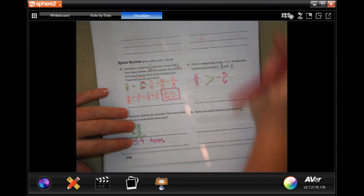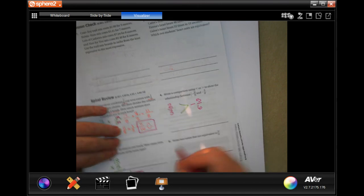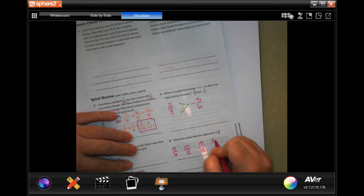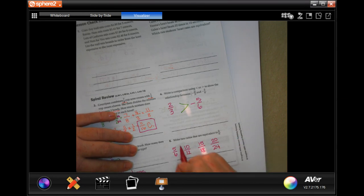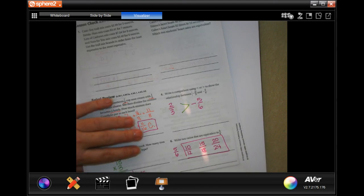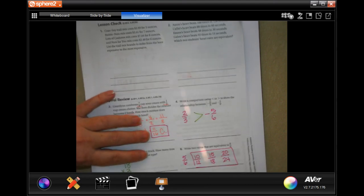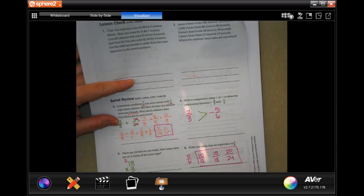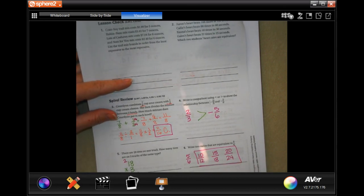Write two ratios that are equivalent to 5 over 6. So let's go 5 over 6. If I multiply 5 by 2, I get 10. If I multiply 6 by 2, I get 12. If I multiply 5 by 3, I get 15. If I multiply 6 by 3, I get 18. If I multiply 5 by 4, I get 20. If I multiply 6 by 4, I get 24. You can write down any two of those, or you can keep going if you want to. All up to you. But you can write down any two of those and be perfectly clear.